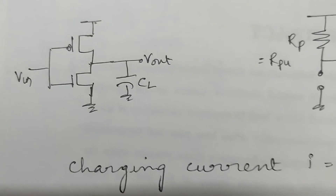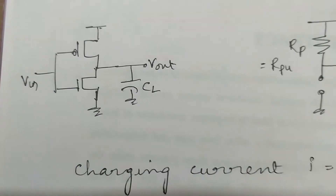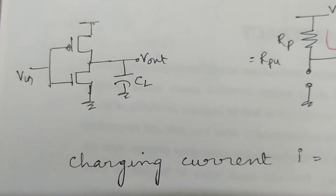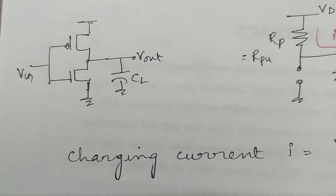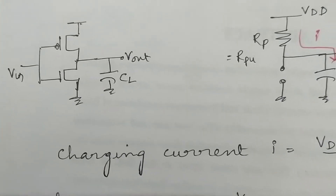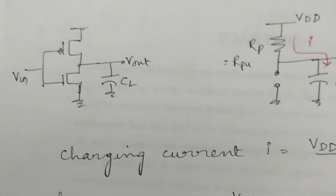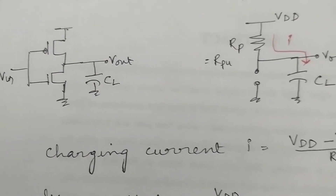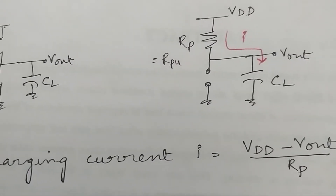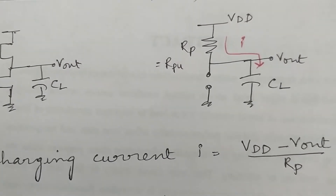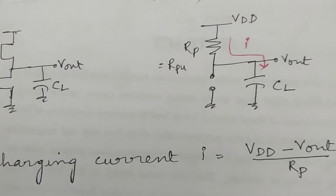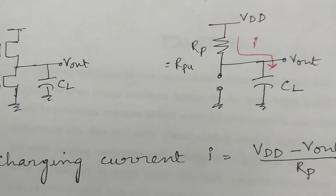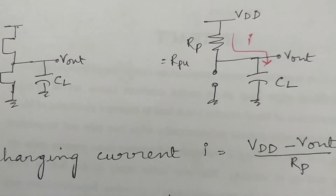Consider the inverter which consists of PMOS and NMOS transistors. When VIN = 0, PMOS is on and NMOS is off. For calculating the rise time we consider VIN = 0 so that PMOS is on and NMOS is off. PMOS is replaced by its equivalent resistance RP, and because NMOS is off, charging of the load capacitance takes place through RP.